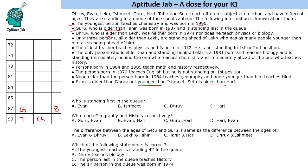Only three persons, all older than Lake, are standing ahead of Lake, so Lake is at the fourth position. Lake has as many people younger than him as standing ahead of him — three ahead, so three younger. This means Lake must be born in 1984. This column is birth year, this is the name, this is the subject they teach, and this is the position in the queue.